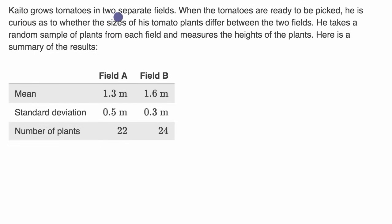Kaito grows tomatoes in two separate fields. When the tomatoes are ready to be picked, he is curious as to whether the sizes of his tomato plants differ between the two fields. He takes a random sample of plants from each field and measures the heights of the plants. Here is a summary of the results.